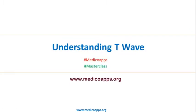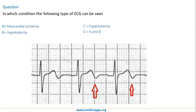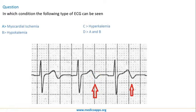In this short video lecture we will try to understand different kinds of morphology for T waves and how we can use T wave morphology to come to certain diagnoses. Let's start by looking at a question: in which of the following conditions is this type of ECG seen? In this ECG we can see a normal QRS complex and a normal P wave, but the T wave is biphasic — it first goes up and then comes down. Biphasic T wave is a characteristic of both myocardial ischemia and hypokalemia, so the answer is D.